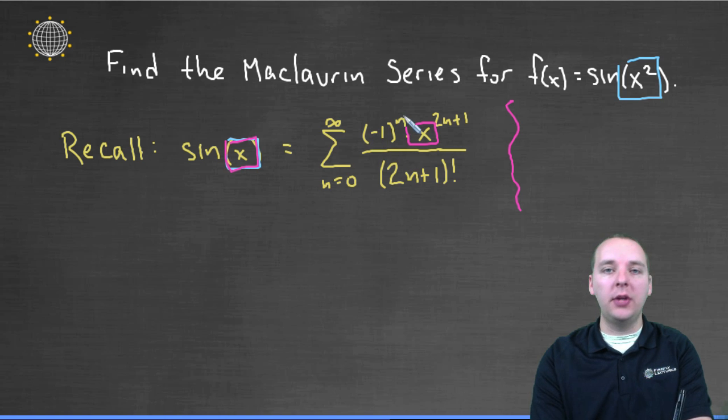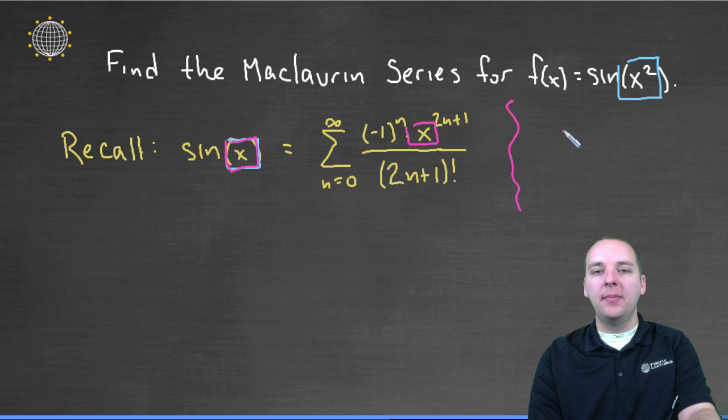Now the (-1)^n will not change. The (2n+1) factorial will not change. But if we had (x²)^(2n+1),